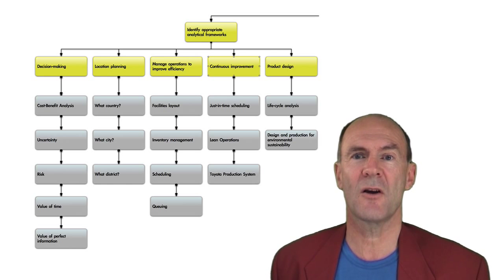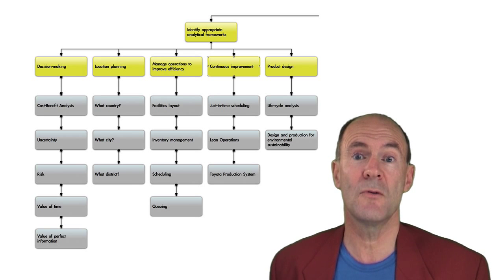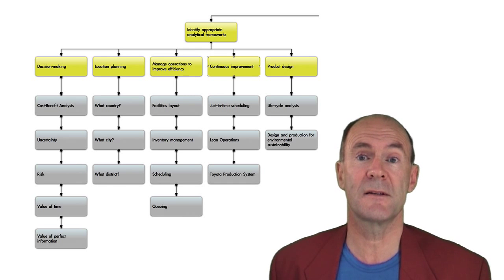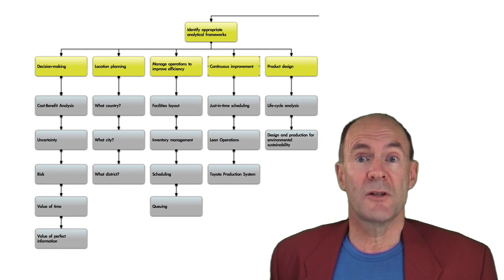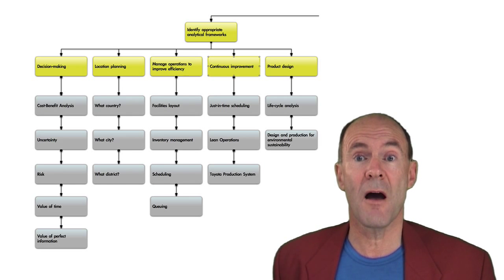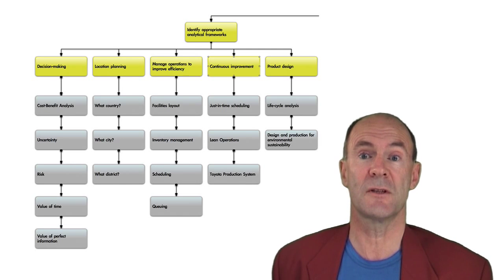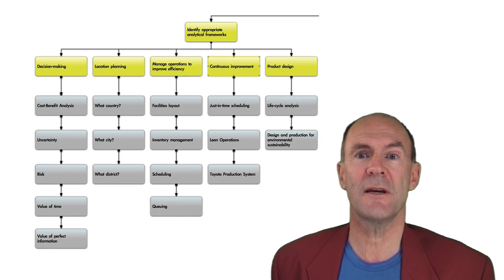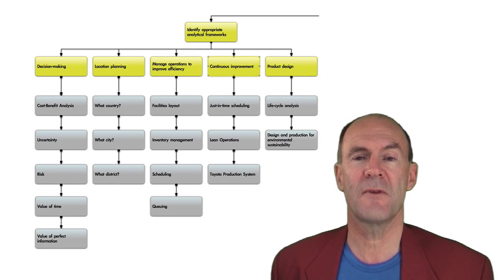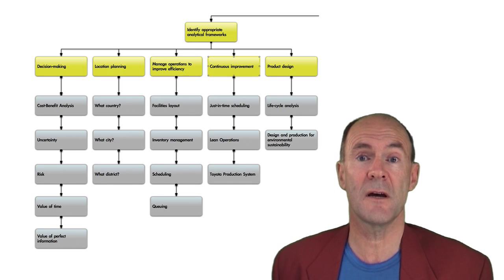These days, businesses are focused on continuous improvement, looking for ideas and methods to improve efficiency and effectiveness all the time, seeking ideas from employees, suppliers and others throughout the supply chain. There are several approaches we'll be covering in the course. The first is just-in-time scheduling, which reduces some of the issues associated with inventory management. Lean operations. And we'll be looking at the Toyota production system. This is a very holistic system introduced by Toyota. And variants of the system have been adopted by many companies and countries throughout the world.